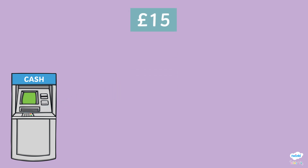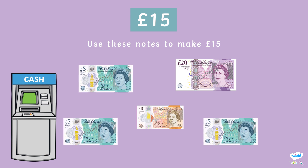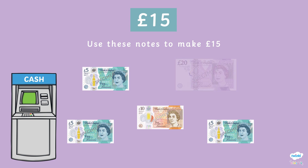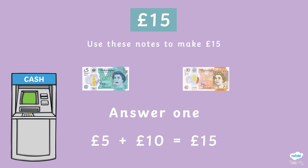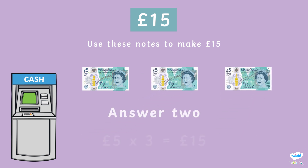The cash machine is giving out more money — it's £15! But that's not a UK note. You can still create amounts using just notes. We have three £5 notes, a £10 note and a £20 note. We can't use the £20 note as we want to make the exact amount. Our first answer is to use one £5 note and a £10 note, as that is equal to £5 add £10 which equals £15. Another way is with all three of the £5 notes — the same as writing 5 times 3 which is £15.